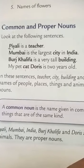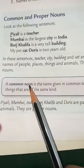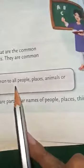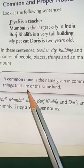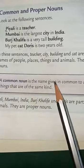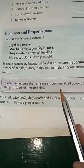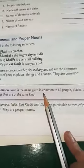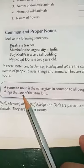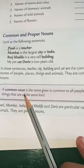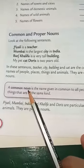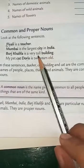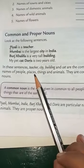Now let us read the definition of common noun. A common noun is the name given in common to all people, places, animals or things that are of the same kind. For example, 'school' - there are various schools in Rampur, but we use one common word that covers all of them. So city, building, cat - these are all common nouns.